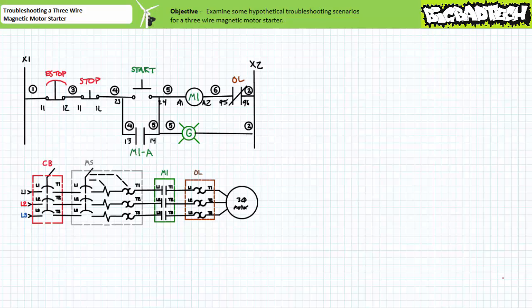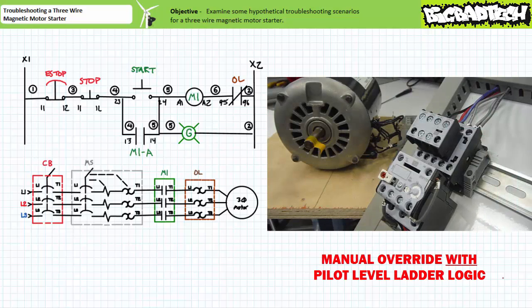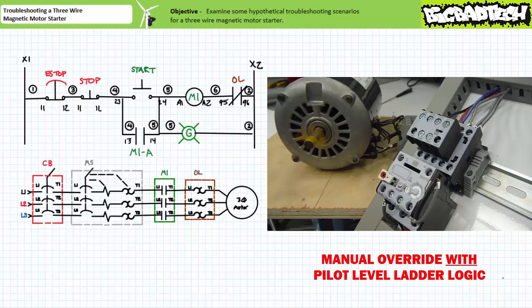The behavior of the manual override is fundamentally and dangerously different when the pilot level ladder logic is functional. As previously, the manual closure of the contactor results in the motor starting. However, when an operator releases the manual override, the contactor remains pulled in and the motor continues to run because the holding circuit has been established.